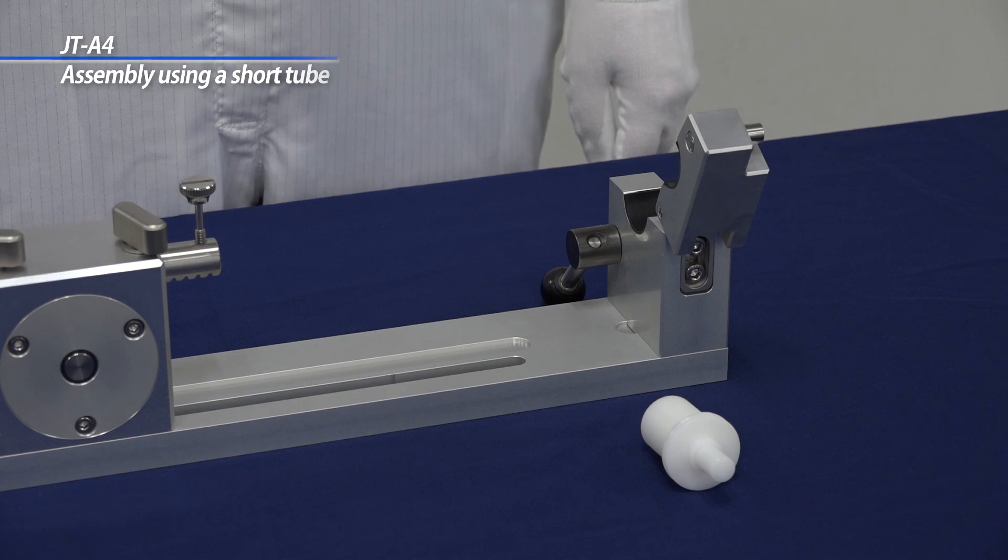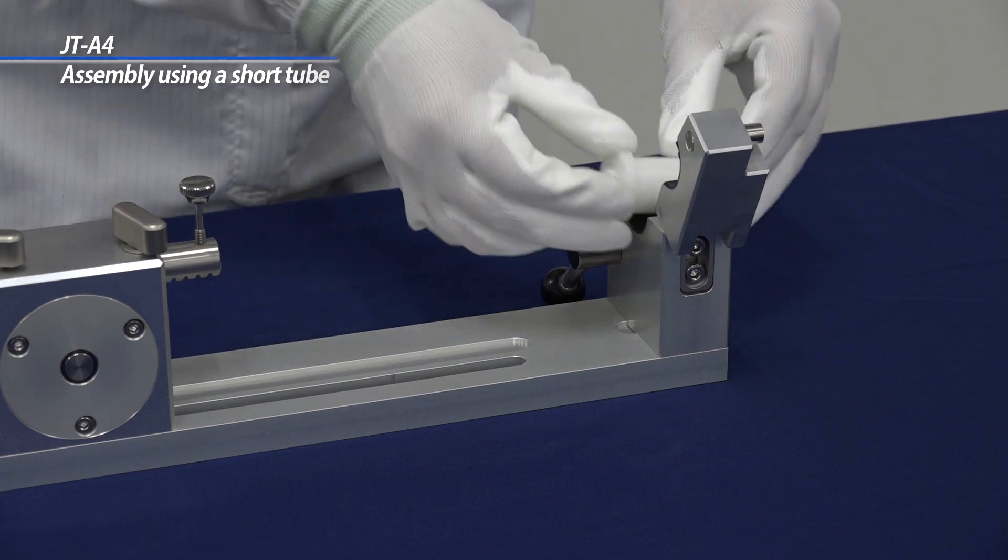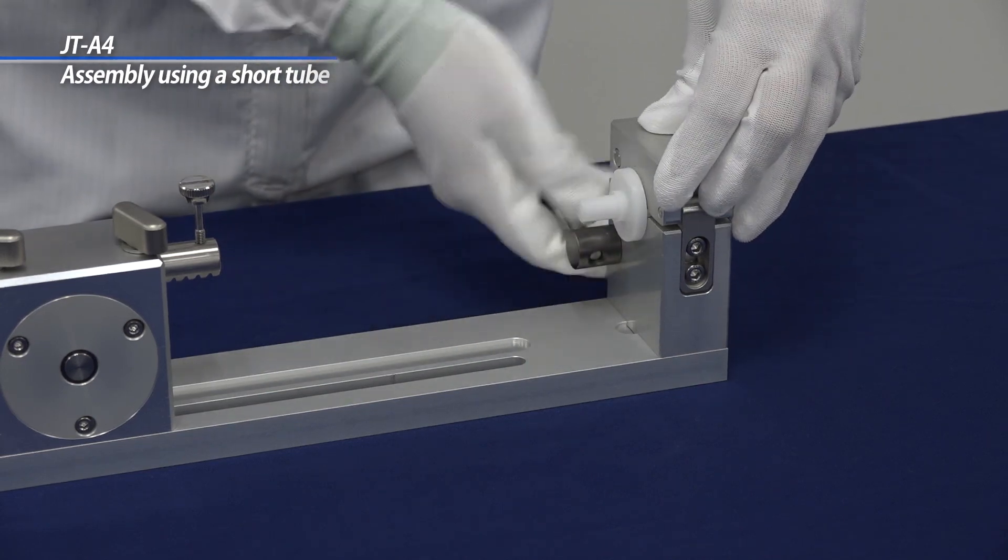The insertion tool also allows an assembly in a short tube. Set the sleeve holder for short tube in the tube clamp.